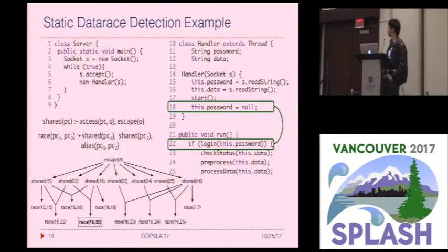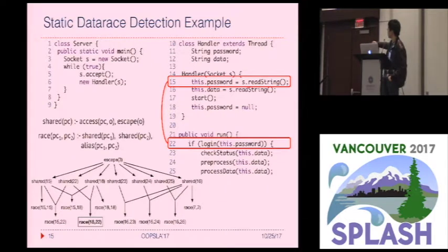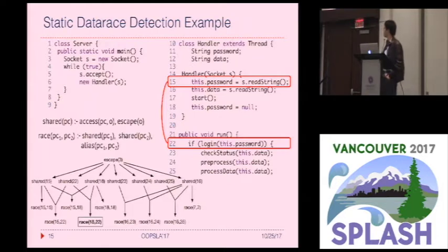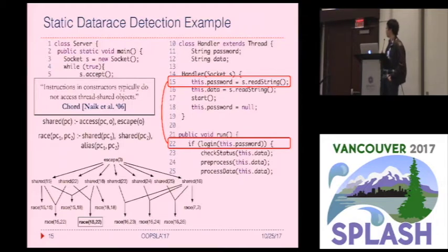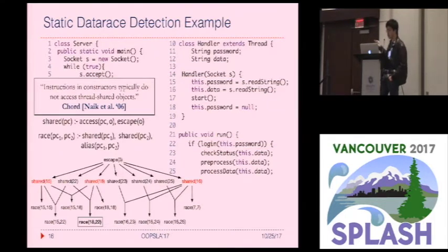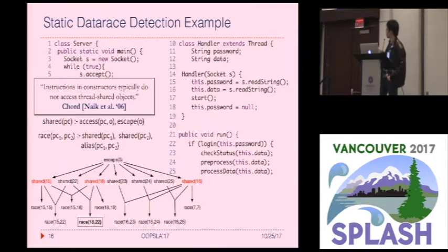At the same time, it also derives eight false alarms. Let's see why. Looking at race(15,22) as an example: this is a false alarm because the handler object only becomes shared by multiple threads after line 17. But because we are applying a flow-insensitive analysis, the analysis thinks the object always escapes. One way to remove such false alarms is to apply the aforementioned heuristic. But the problem is that if we directly apply this heuristic, the real alarm will also be eliminated — we would eliminate shared(18), shared(18), and shared(16) as intermediate tuples, but shared(18) is actually a valid tuple.